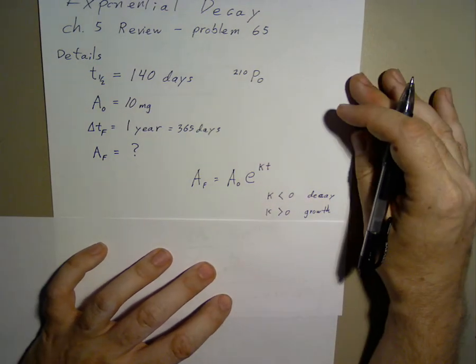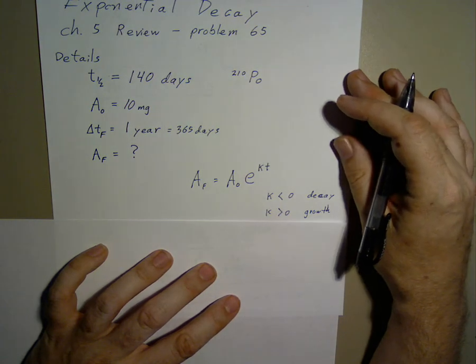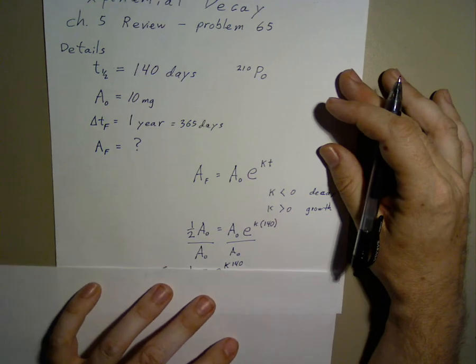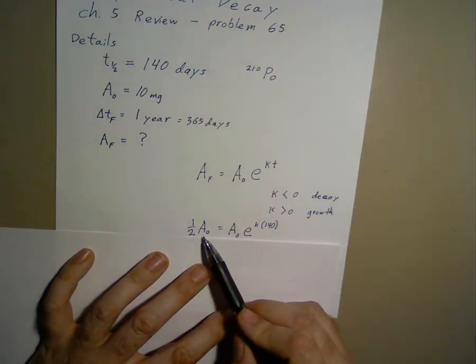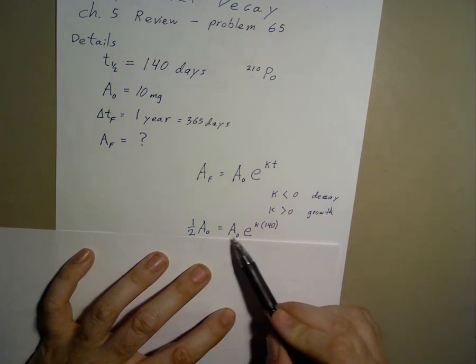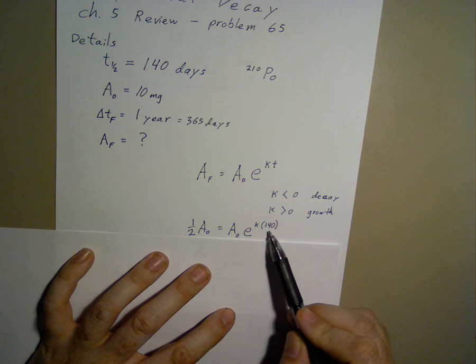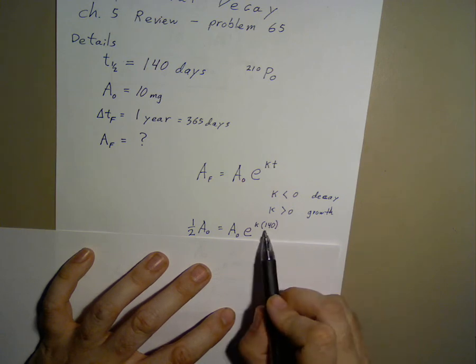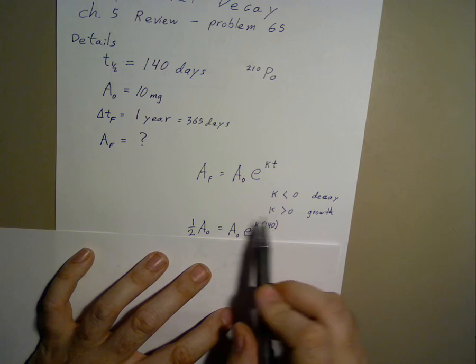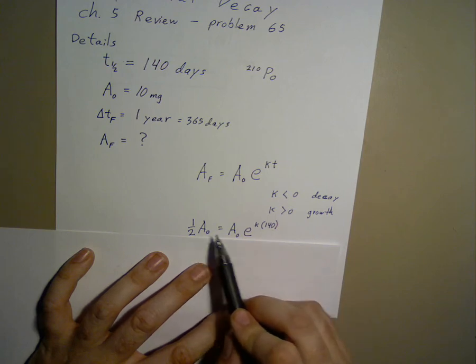Now, what we first need to do is calculate what k is. We'll do this using the half-life. So we start off with one-half of a-naught equals a-naught times e to the power of k times 140. I set time equal to 140 and a-final equal to half of the original.